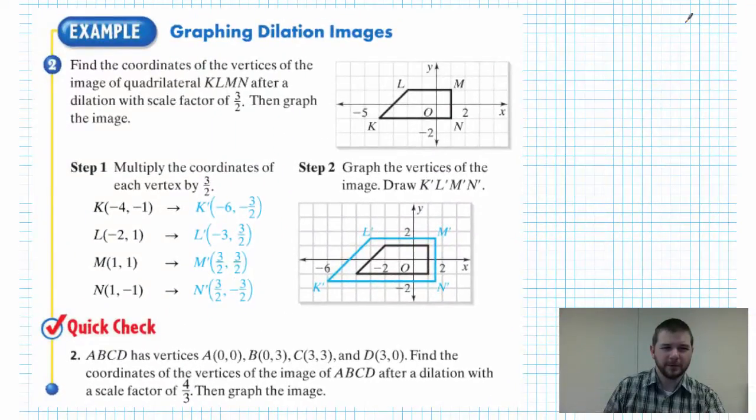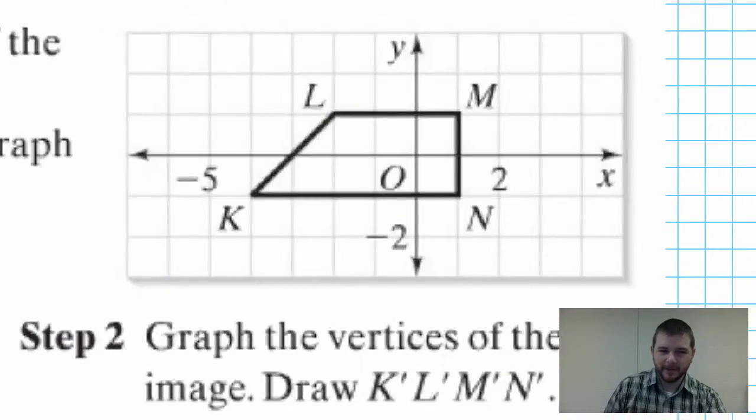Example problem two: graphing dilation images. Find the coordinates of the vertices of the image of quadrilateral KLMN shown at the right after a dilation with a scale factor of three halves, then graph the image. There's something important to note here: unless a center of dilation is specified in this book, we will assume it's at the origin.